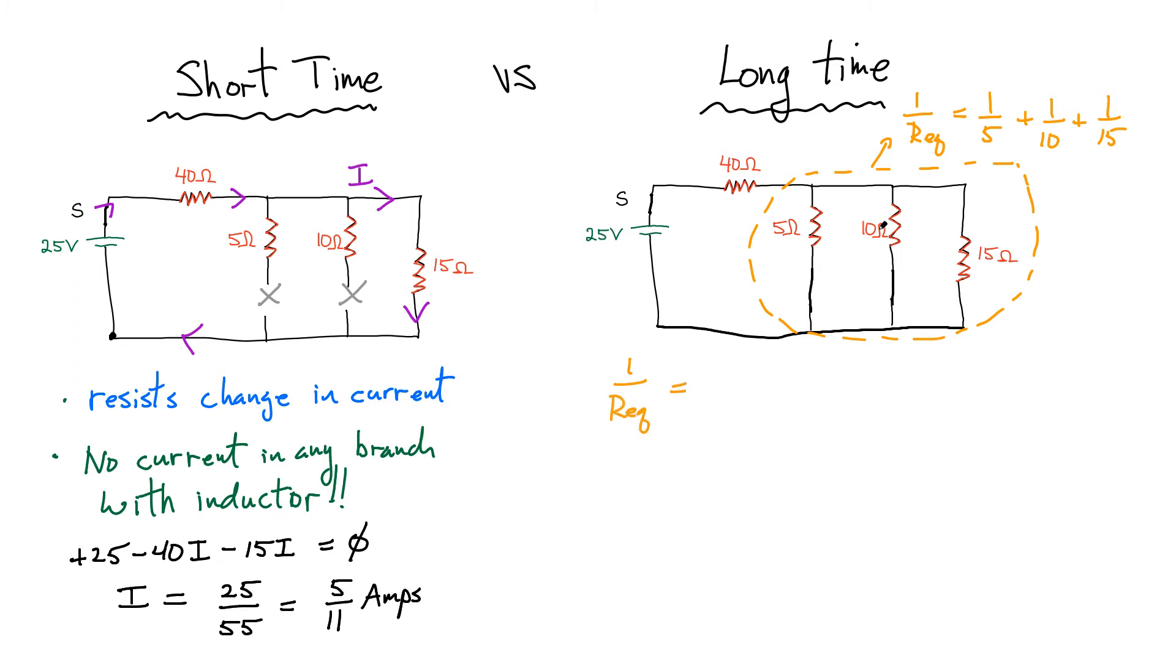If I put things over 30, the first one will be 6 over 30 plus 3 over 30 plus 2 over 30. At the end we're left with 11 over 30. So the R equivalent of everything in this dashed line is simply 30 over 11 ohms. At the end, the total R equivalent of the entire network, now I have a 40 ohm resistor in series with 30 over 11. So you get 40 plus 30 over 11. If I put things over 11, 440 over 11 plus 30 over 11, I get 470 over 11.